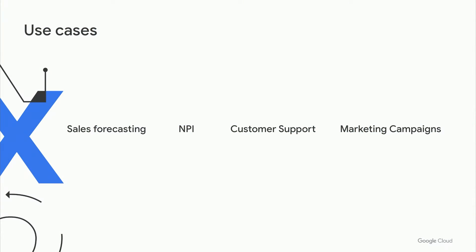Let's talk about some of the use cases. The first and easiest one is sales forecasting — we could use tweets to understand maybe we should be running different promotions, or what a topic will lead to in terms of more or fewer sales. We can do similar things for new product introductions, using Twitter as a focus group to tune products to customer interests. Customer support is a very common one — taking a potential negative sentiment experience and building it into a brand-building opportunity. And finally, pulling this together with marketing campaigns to build a 360-degree view of the customer.